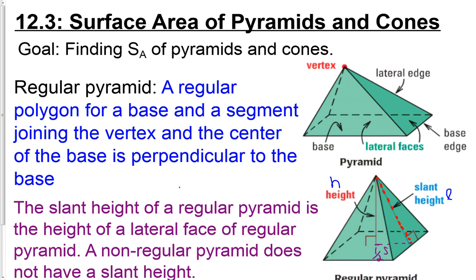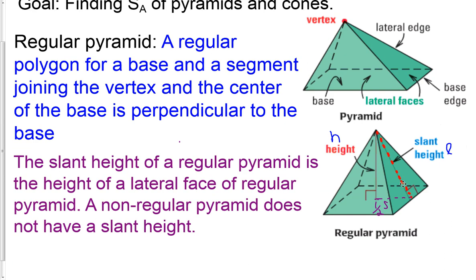For example, this picture right here would have a slant height here that would be possibly different than a slant height here, possibly different than the slant height here. So it would make it a lot more complex having more measurements. Most of ours will look like this.